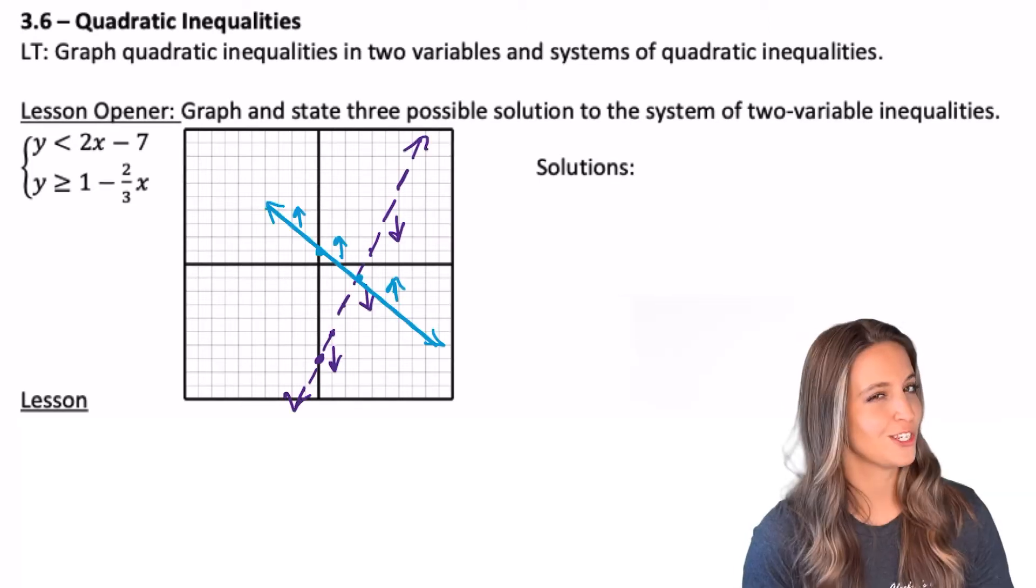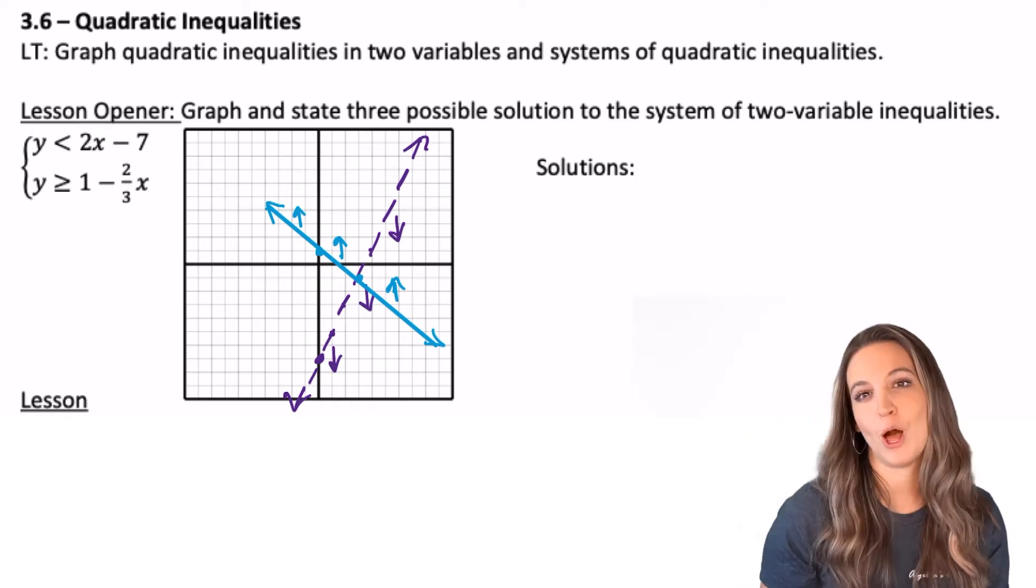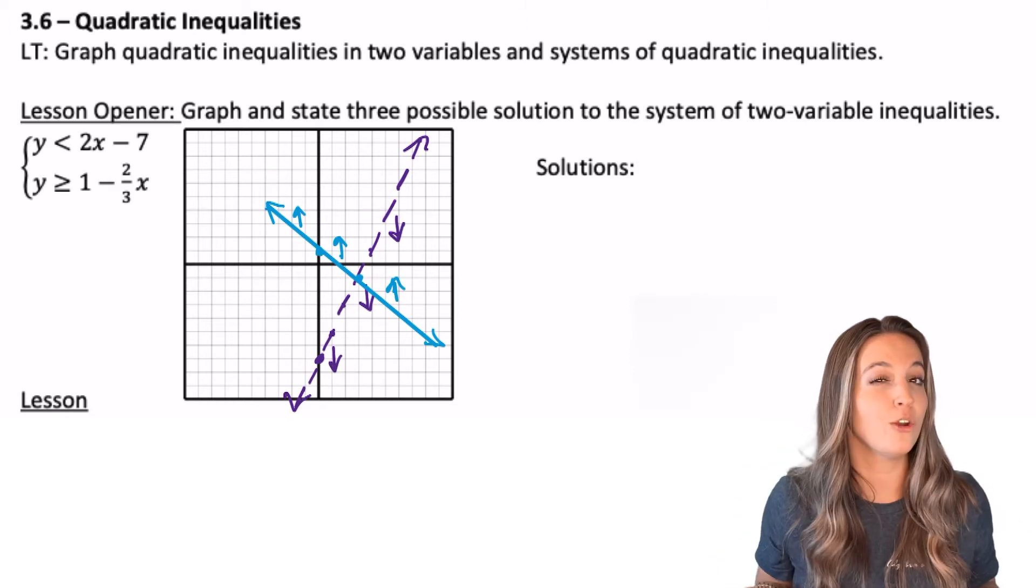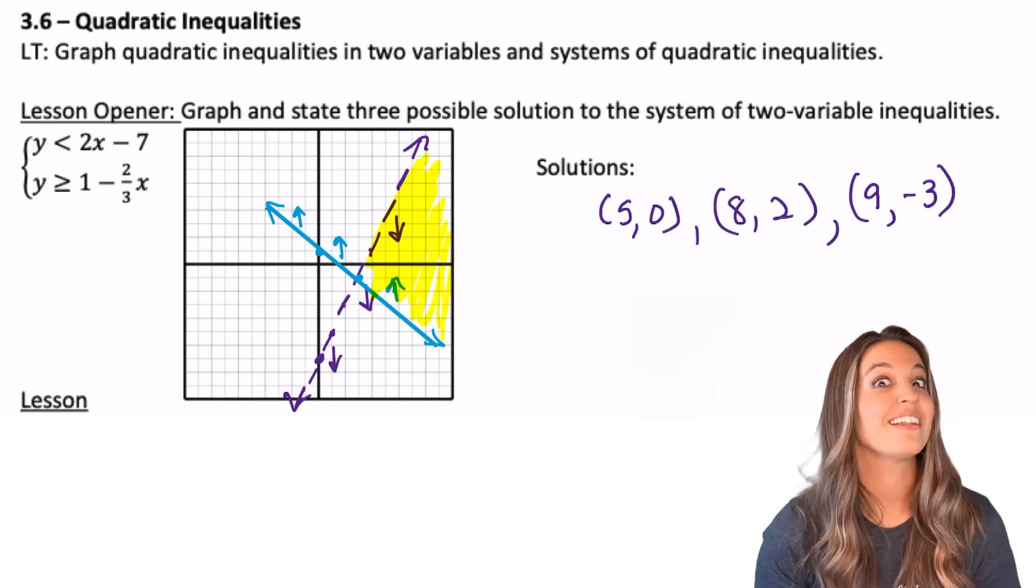When sketching the first inequality, did you notice it was less than, dashed line, arrows below? Second line, solid, arrows pointed up. So where's the shaded region? All the way to the right. Now let's state three solutions in that set.